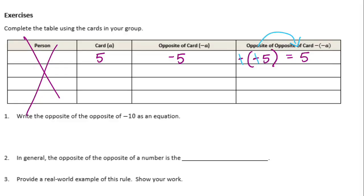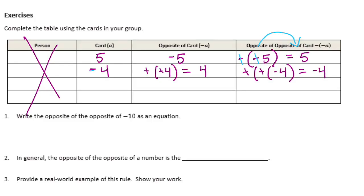Let's try a negative number: negative 4. The opposite of negative 4 is 4, because those two negatives cancel. But the opposite of the opposite of negative 4: we had two negatives cancel, yet we're still left with a negative, so it equals negative 4. Let's also try positive 13: the opposite of 13 is negative 13, and the opposite of negative 13 is 13. And for negative 2: the opposite of negative 2 is 2; those cancel, so the opposite of the opposite of negative 2 is negative 2. We always end up with the original number we started with.